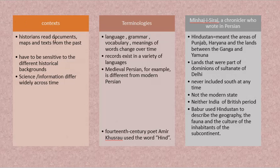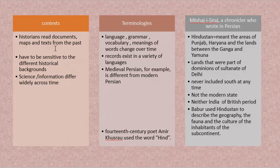Context is important for a historian studying history. Historians read documents, maps, and texts from the past, but you have to read them in context. Reading Al-Idrisi's map, you should not say Sri Lanka is in the north of India — you have to read the context in which that map was drawn. One has to be sensitive to the historical background. The information about India available to an Arab person may not be the same as the information available to a European or a native Australian. We must be sensitive to differences in historical context, science, technology, and the ability to measure and draw a map to scale.